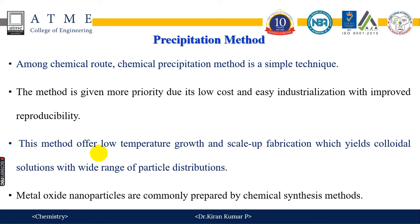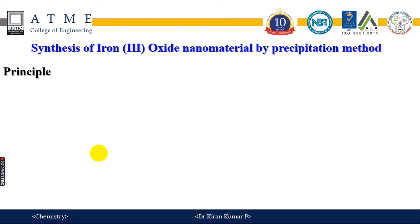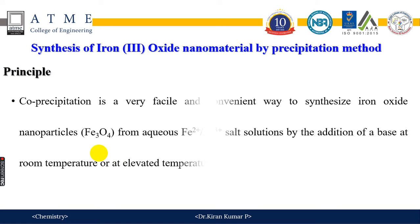The precipitation method is a method where commonly metal oxide nanoparticles are synthesized. Let us see the principle of the precipitation method for iron oxide nanoparticles. Co-precipitation method is a convenient way to synthesize iron oxide nanoparticles, that is Fe₃O₄. It is synthesized from Fe²⁺ and Fe³⁺ salt solution by addition of a base at room temperature or at elevated temperature.